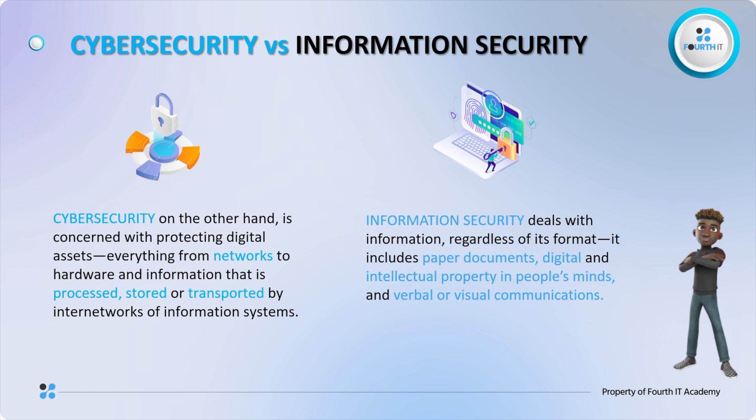Data at rest is data that you have saved — like your pictures in the cloud on your phone. Data in transit is when you are sending a message or data to someone. And data in use is data you are currently using — for example, if you've opened a file and you are editing the documents in there, those are data that are in use.